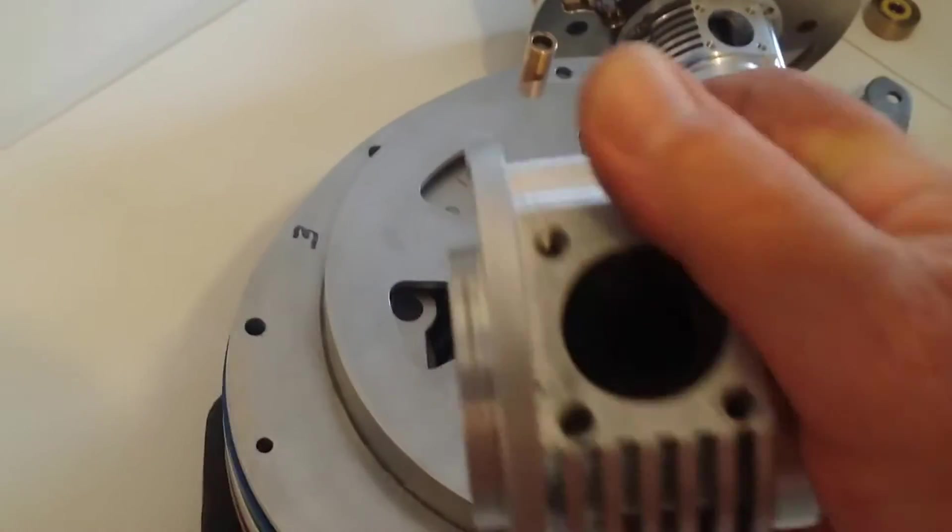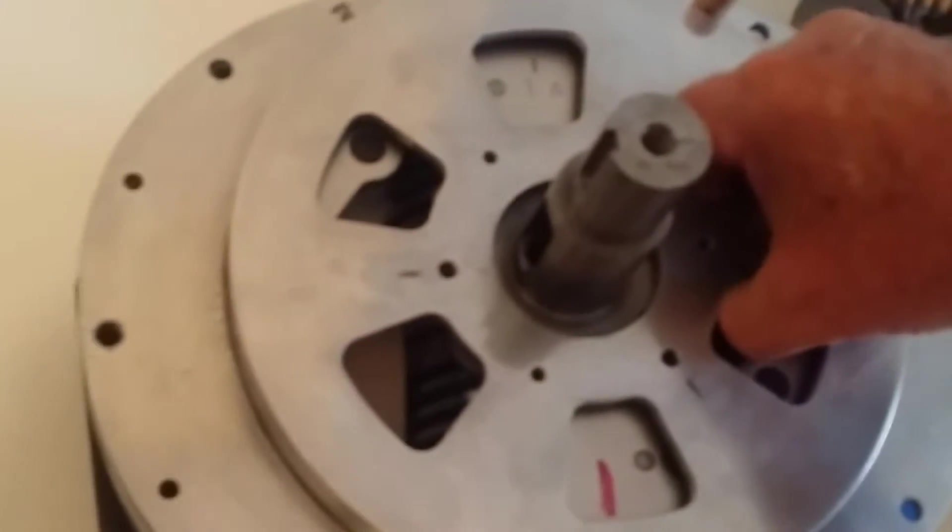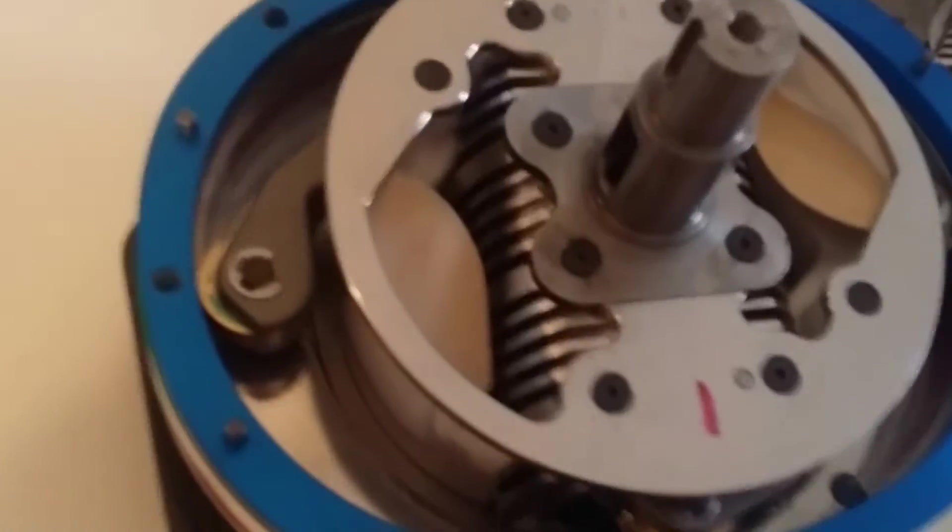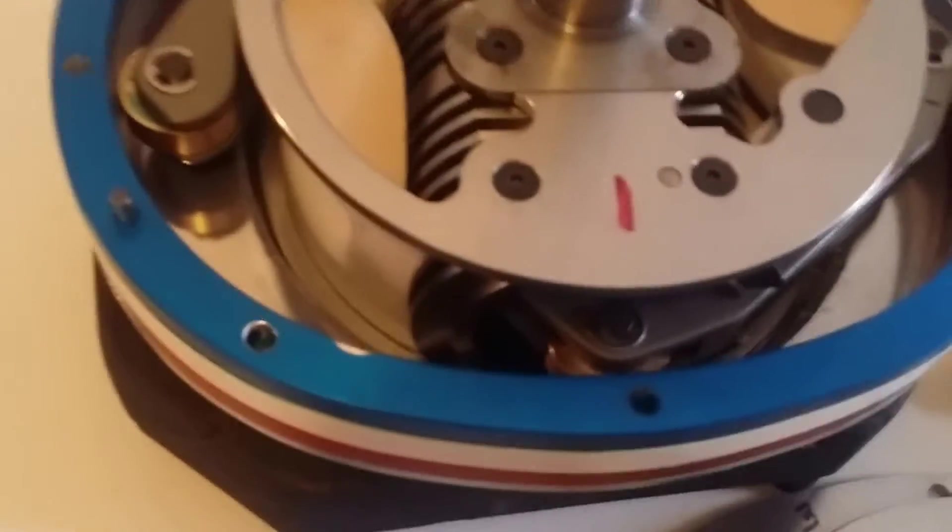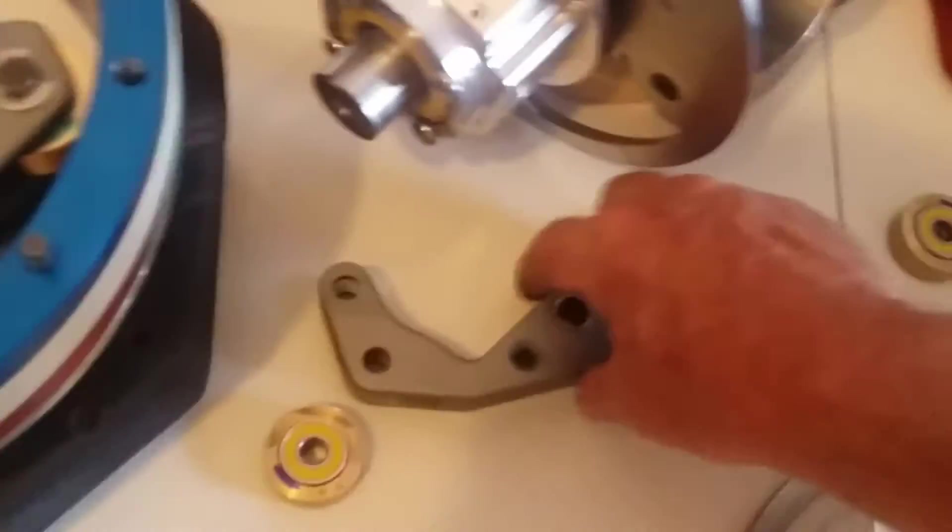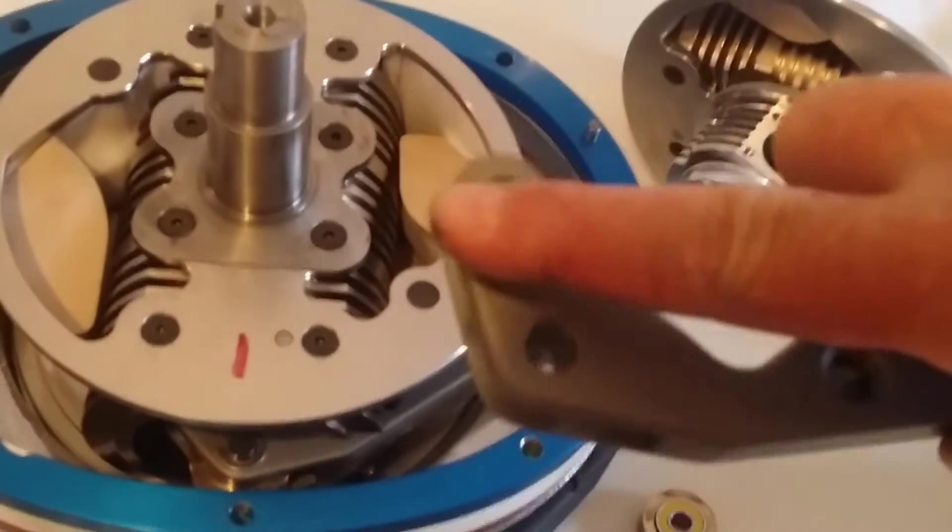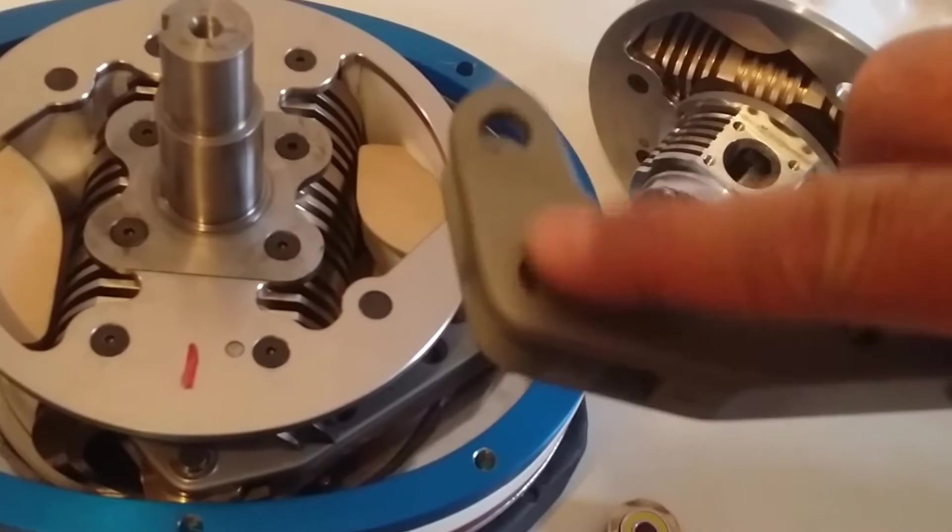Here we've got the intake, the exhaust, spark plug screws in there. I'm going to pull this housing off so you can see what's going on there and verify that there is indeed no crankshaft. Now each piston is connected through connecting rod to a cam follower right there.